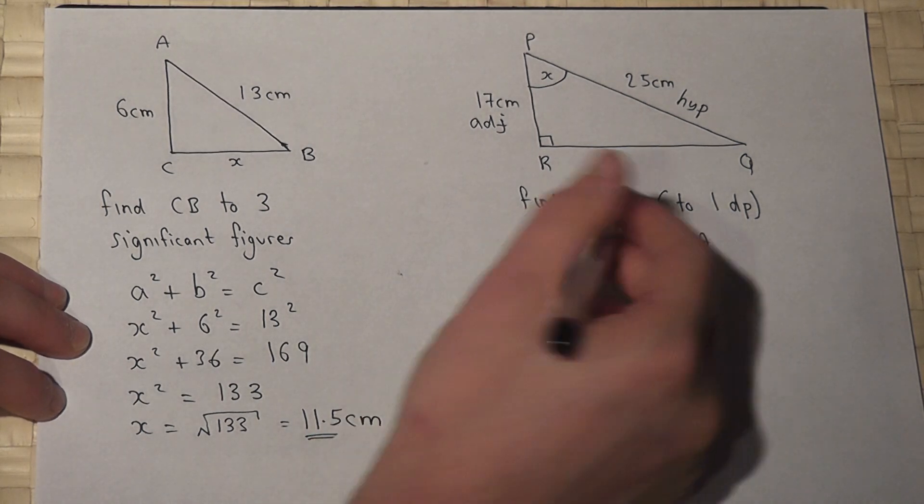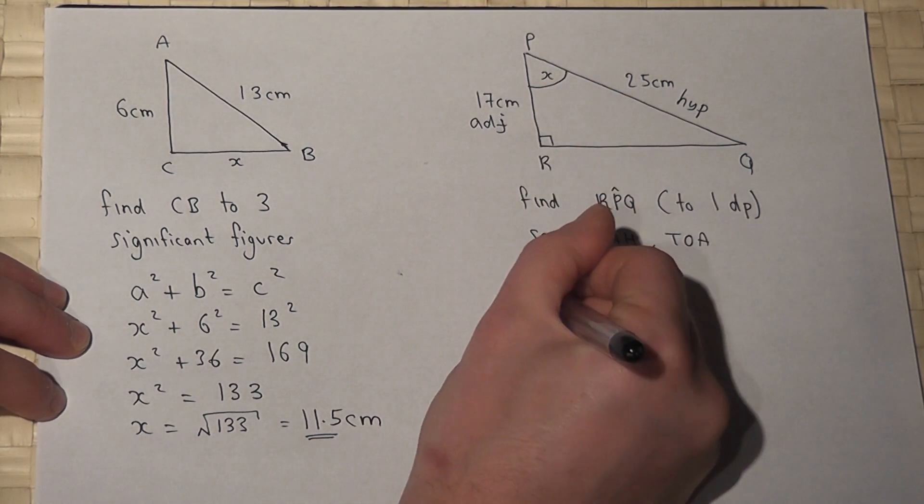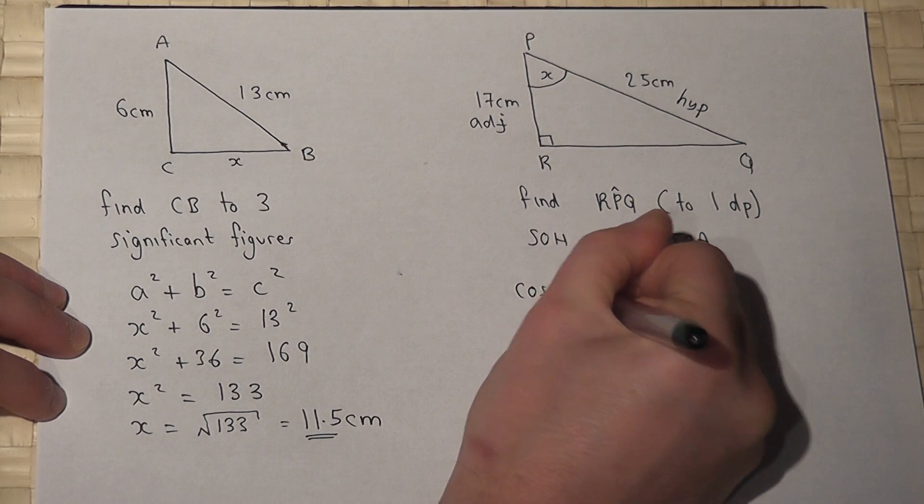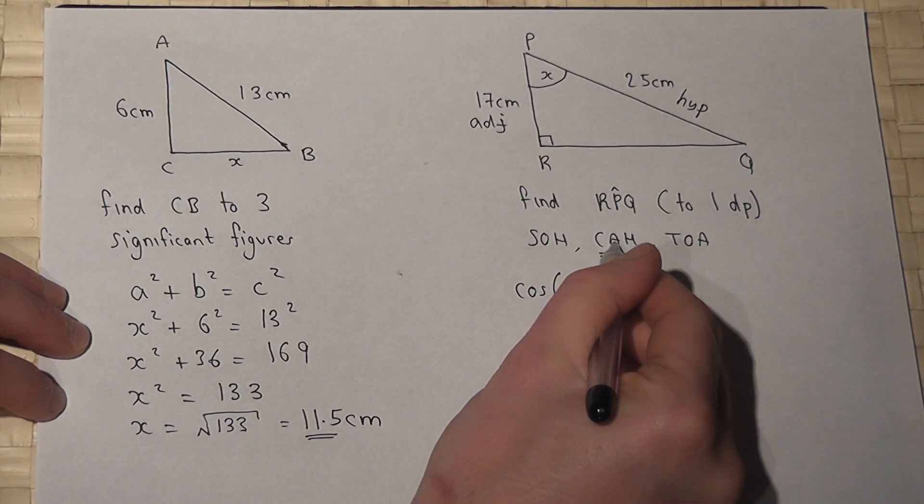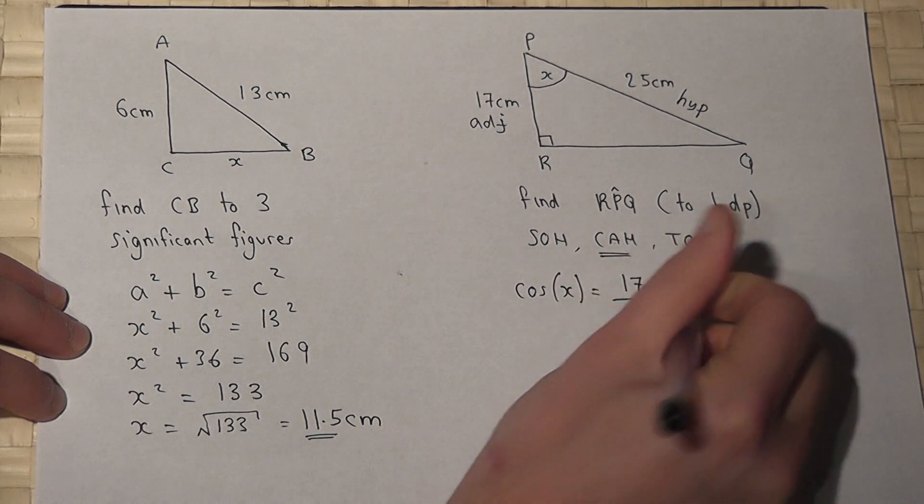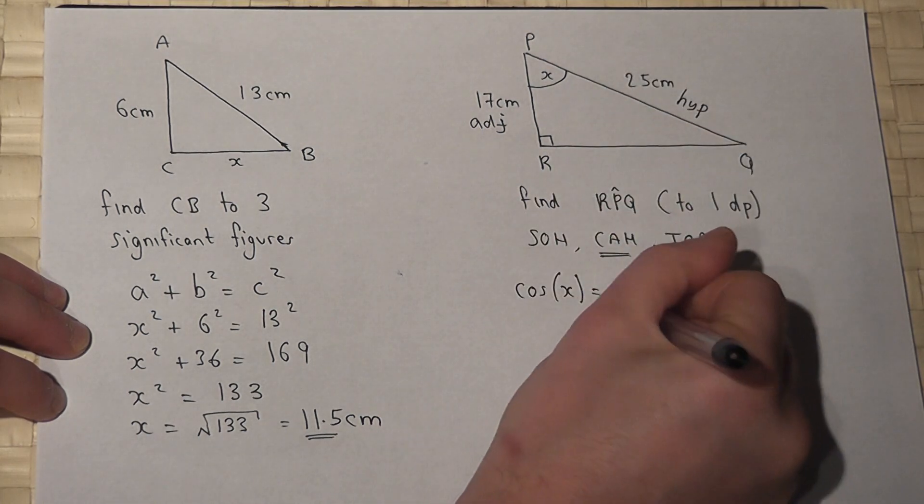So this tells me that cos of the angle is equal to adjacent, which is 17, divided by the hypotenuse, which is 25.